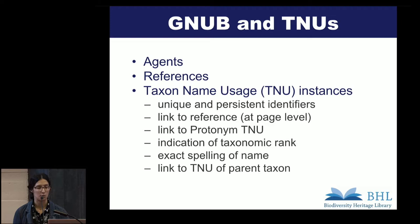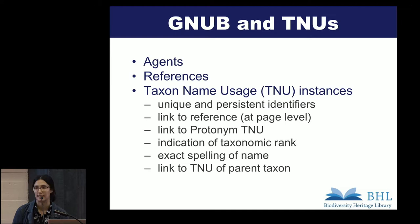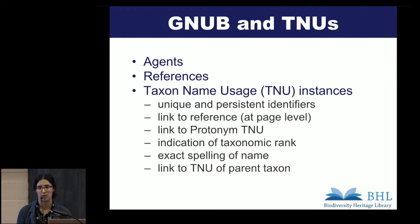The semantic linking done through scientific names is made possible by the Global Names Usage Bank. The Global Names Usage Bank indexes every usage of a scientific name and the resources in which they are mentioned. Globally unique identifiers are given to three concepts in the Global Names Usage Bank: the agents, references, and taxon name usage instances. Agents are typically people or organizations that are authors of the references. The references are the published or unpublished works that the names are found in. The taxon name usage instances are every time a name is used in those references, so references can have multiple TNUs.